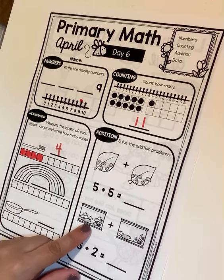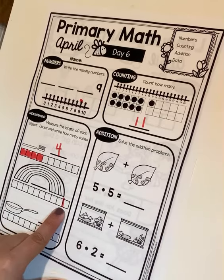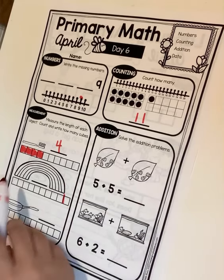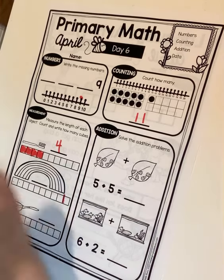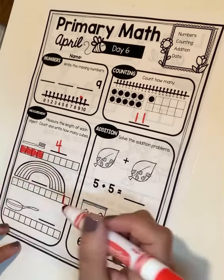Now how about this rainbow? Wow. The rainbow goes all the way to here. That's a lot. Can you count those with me? One, two, three, four, five, six, seven, eight, nine. Wow. The rainbow has nine cubes. It measures nine cubes across.